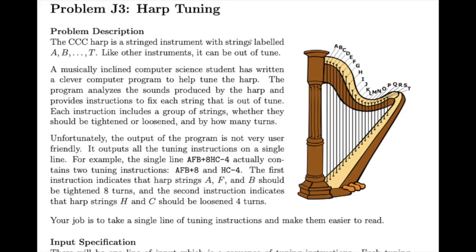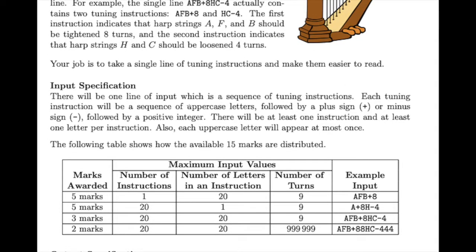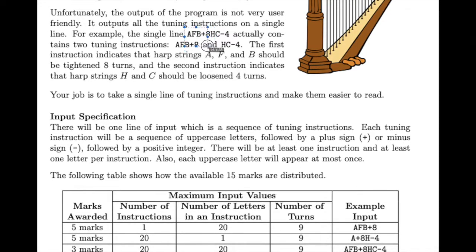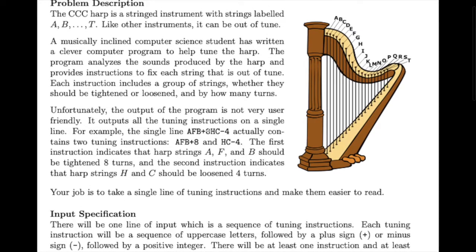If you look at the harp, they have strings labeled from A to T. The input looks like 'AFB+8 HC-4'. We have to parse tuning instructions: a sequence of uppercase letters like AFB, followed by either plus or minus (tighten or loosen), and finally a number — in this case 8 or 4.